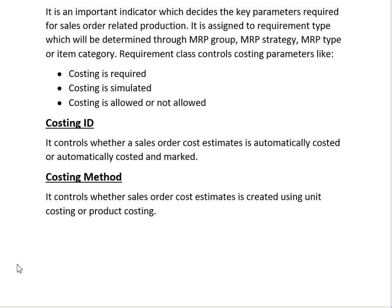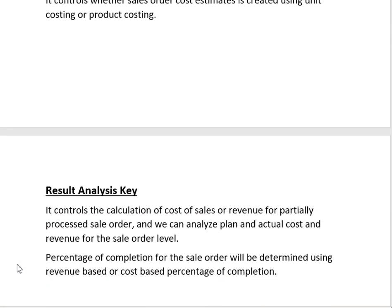Next is the Costing Method, which controls whether a cost estimate is created using unit costing or product costing. We have also created costing methods in previous videos and will create them again in the configuration videos. Next is the Result Analysis Key. We also created the result analysis key in the Make to Stock production environment configurations, where it was used for Work in Progress calculation. The result analysis key is also used in sale order costing.